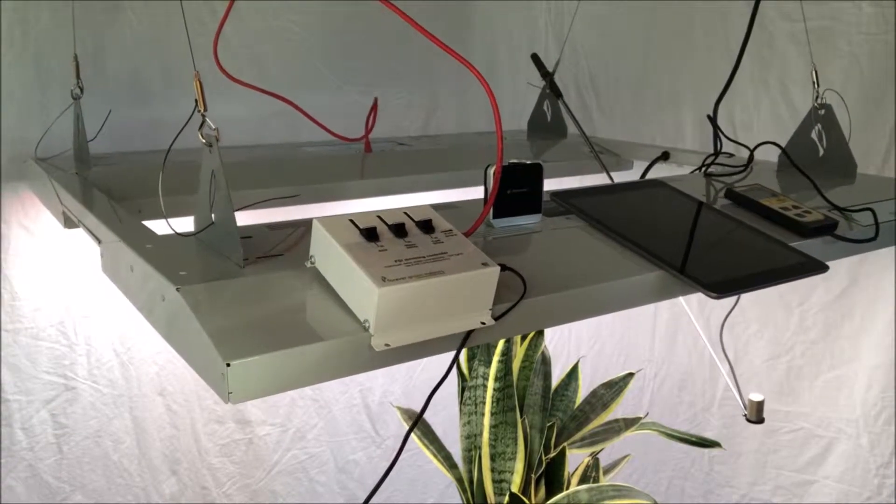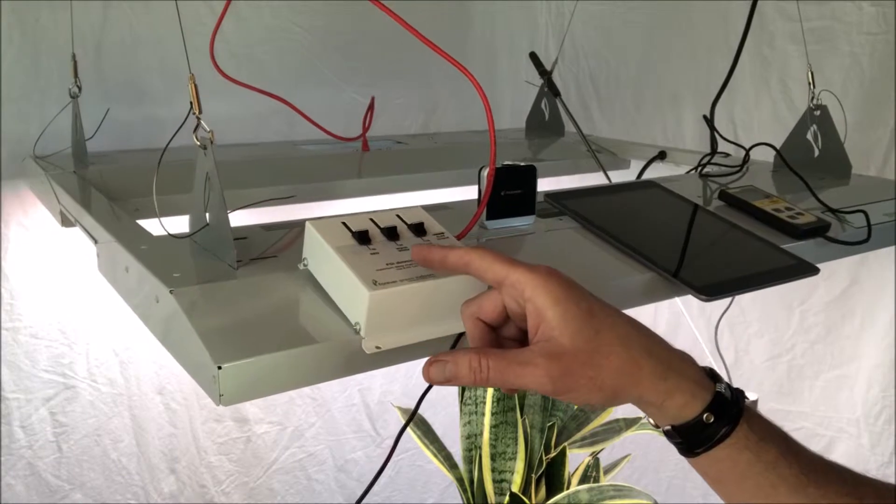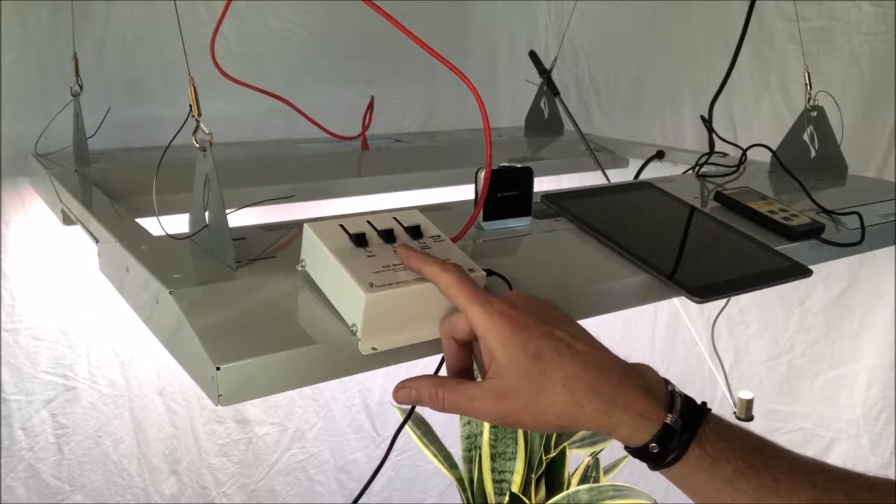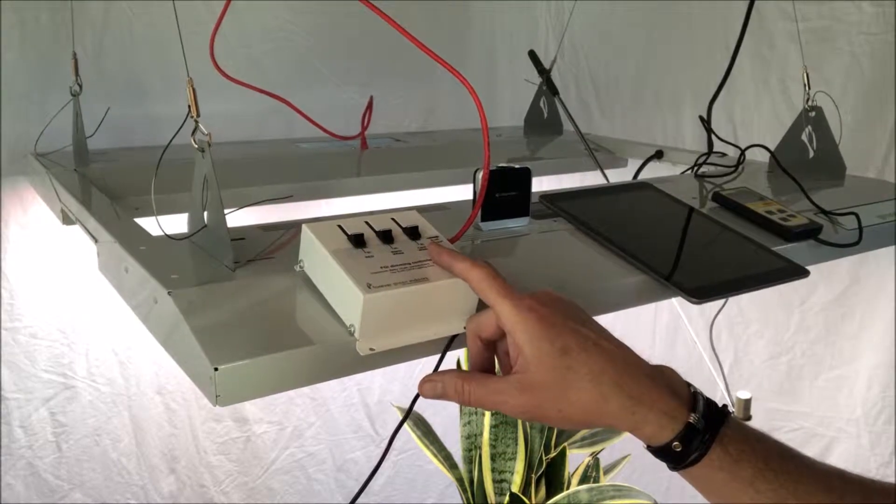Here's what we have for the measurements. First of all, we do have the FGI controller. We have three different channels that we can manage: the red channel, the warm white channel, and the cool white channel. We'll be taking readings under each one of those.